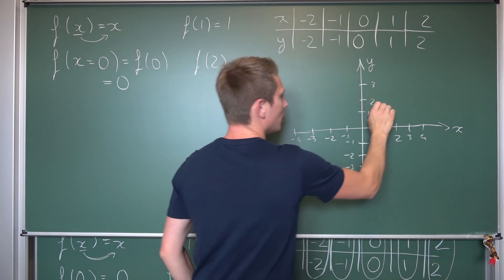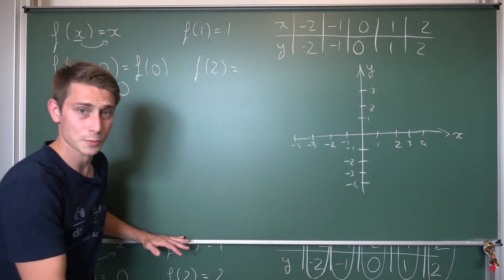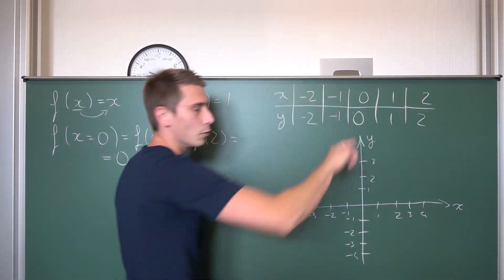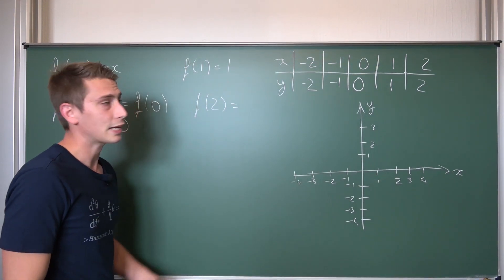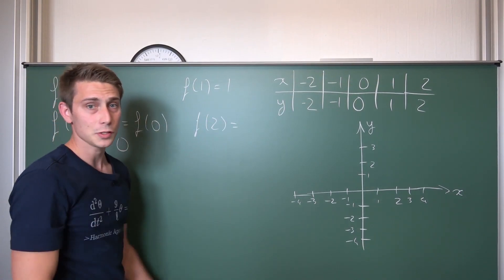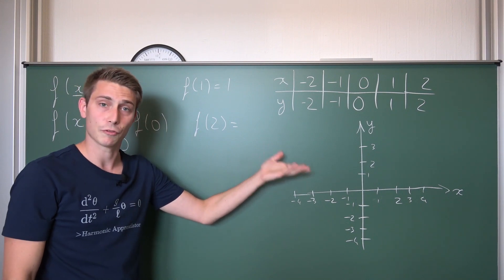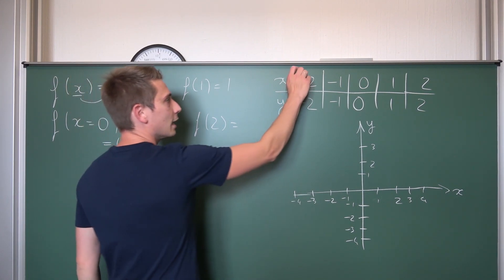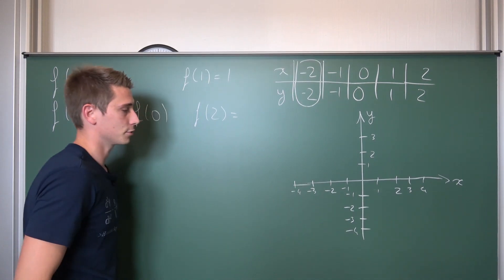But we don't need to go up to 4, honestly, because we only go up to 2. Now we are going to take our pairs of values and we are going to see if we can find a point in the coordinate system. Let us start with negative 2 and negative 2.